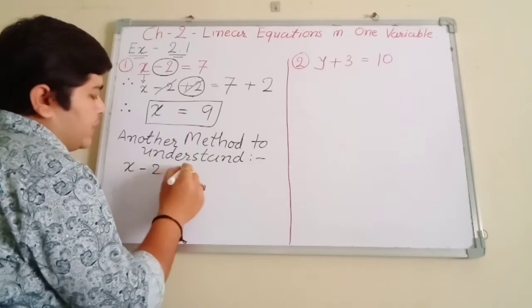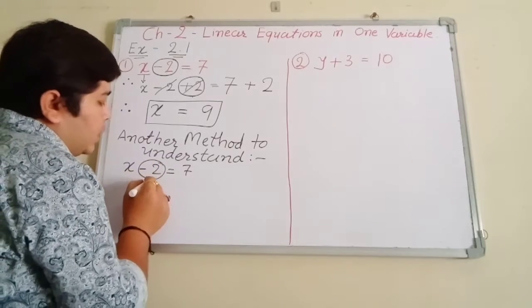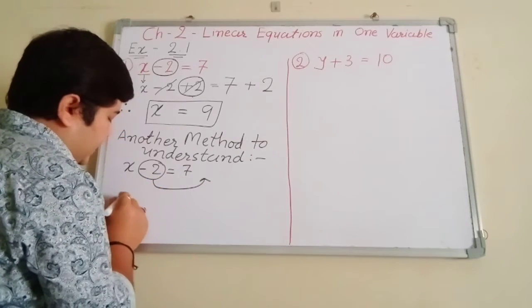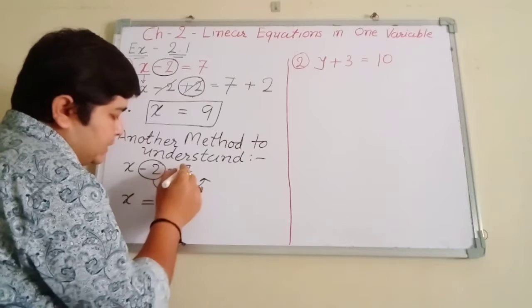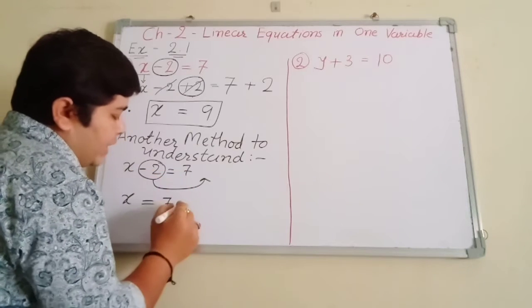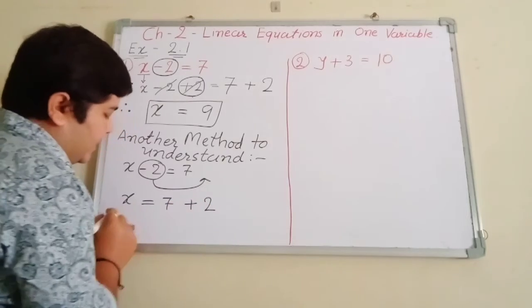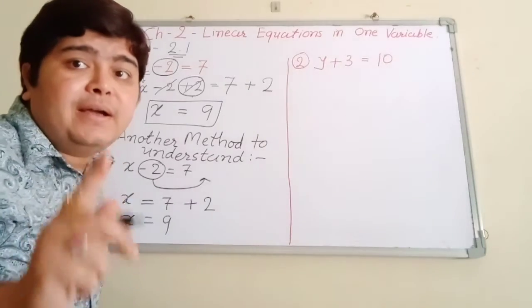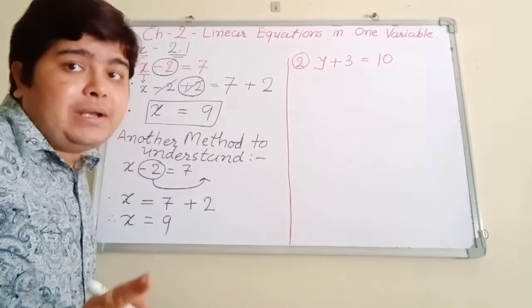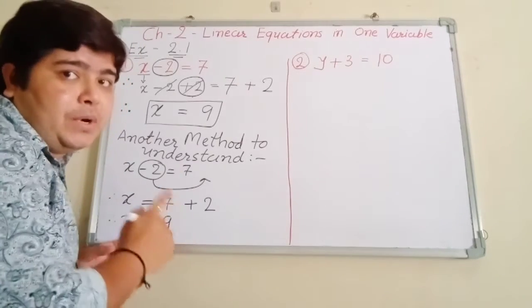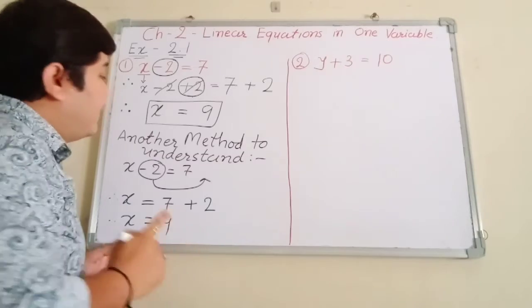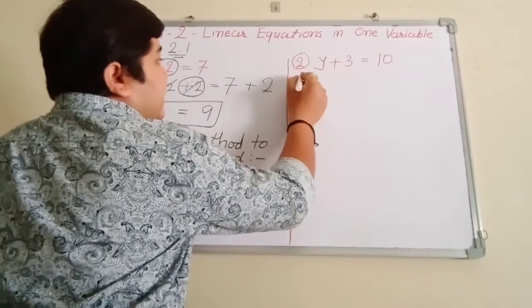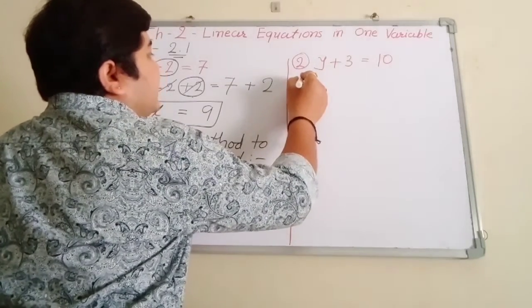If x minus 2 equals 7, this is the right-hand side. You will get the answer 9 because you already studied linear equations in standard 7. So you will just remember this. After that, let's see according to your textbook this next problem as well.